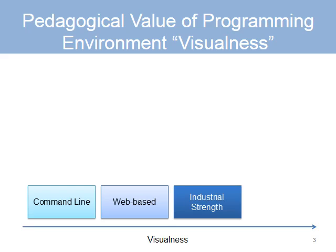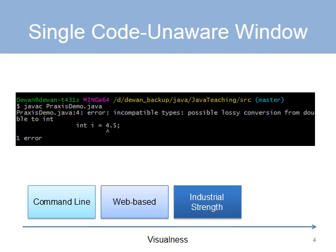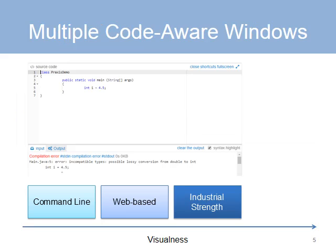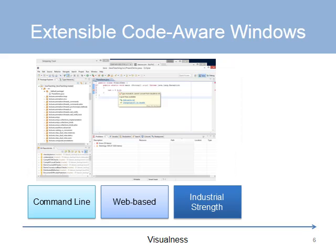To understand the relationship between programming environments and teaching, let us consider the visualness of a programming environment. On the extreme left is the command line environment, which provides a single window that is completely unaware of the fact that there is code being manipulated. In the middle is the web-based environment, which has two windows, both of which are partly aware of the fact that they are manipulating code. On the extreme right is an industrial-strength visual environment with an arbitrary number of code-aware windows, each of which provides sophisticated commands.